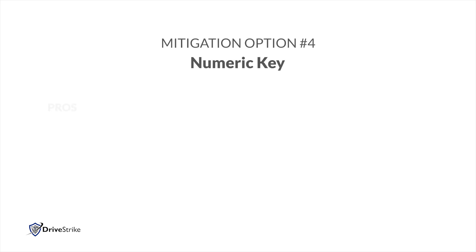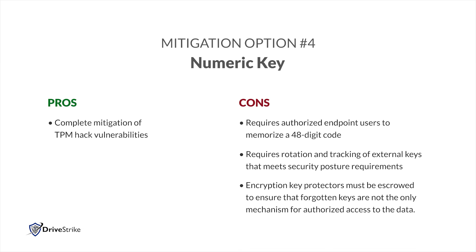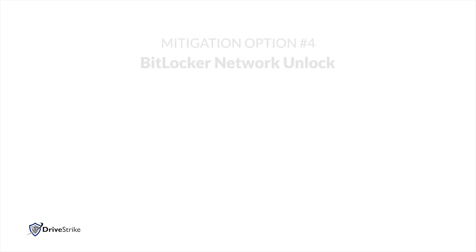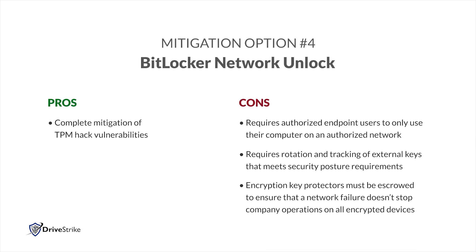Numeric key: this completely mitigates TPM hack vulnerabilities, with the downside requiring authorized endpoint users to memorize a 48-digit code. You will also want to rotate and track these keys at some interval that meets your security posture requirements. BitLocker Network Unlock: this completely mitigates TPM hack vulnerabilities, with the downside requiring authorized endpoint users to only use their computer on an authorized network that manages the key protectors. Encryption key protectors must be escrowed somewhere to ensure that a network failure doesn't stop company operations on all encrypted devices.